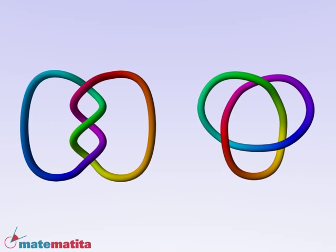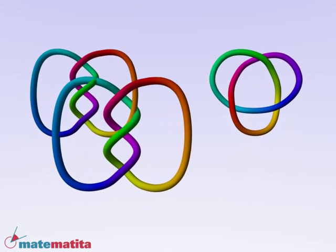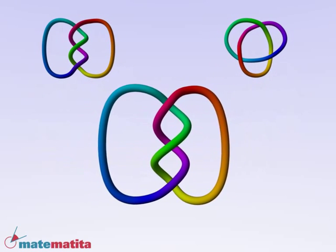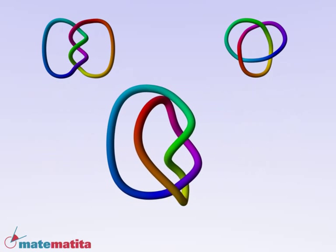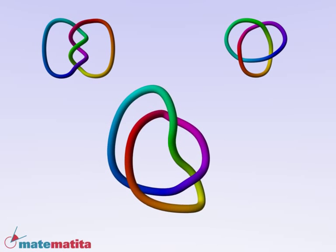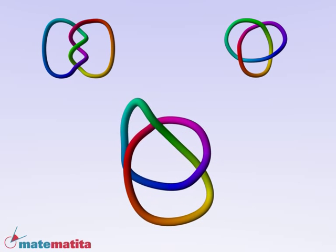These two knots look different too, but they are tied in the same manner, in some sense. They have different shapes, but represent the same knot. One can be deformed into the other, without ever cutting the strings.